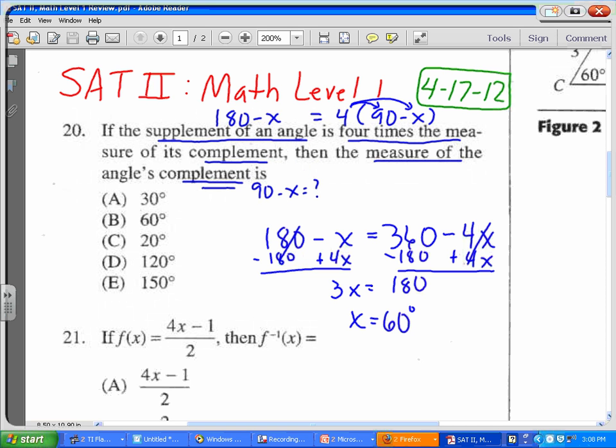But the complement of that angle is 90 minus x. So 90 minus x would be 90 minus 60, which is 30. So the complement of the angle becomes 30 degrees. So in this case, the answer would have been answer A.